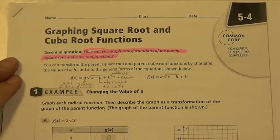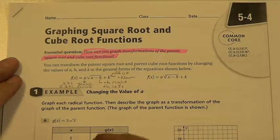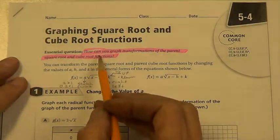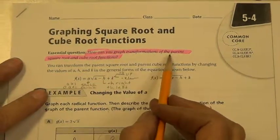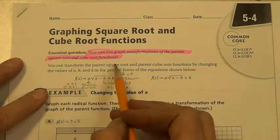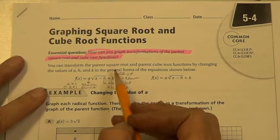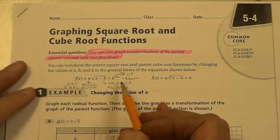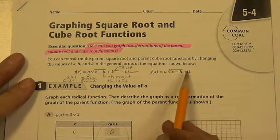Welcome! This is 5-4 graphing square root functions and cube root functions. How can you graph transformations of the parent square root and cube root functions? We've already looked at these, but we're going to do a little bit more looking at the h and k shifts.